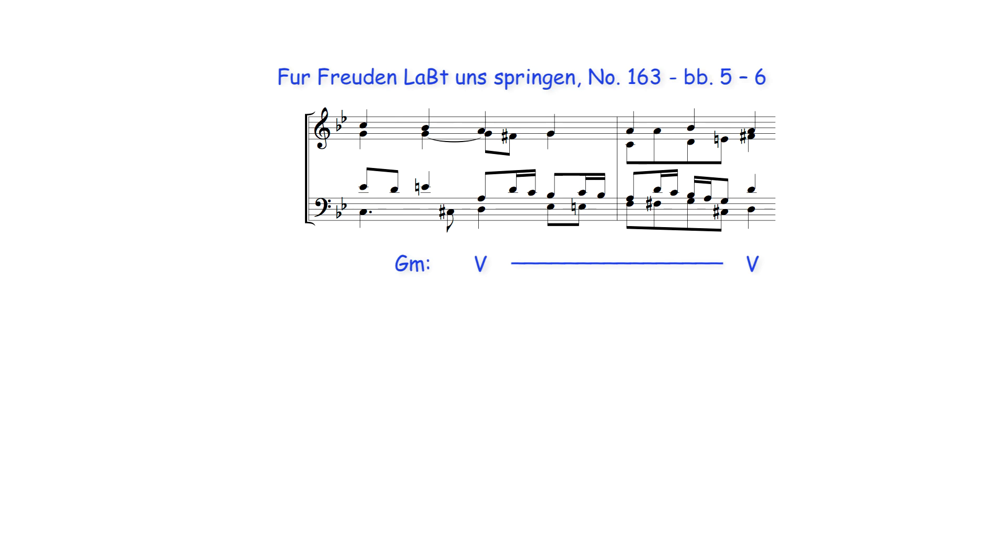And later in the same chorale, a chromatic bass in eighth notes prolongs the dominant of G minor, producing a series of secondary chords, resolving to G minor's submediant, subtonic and tonic chords.